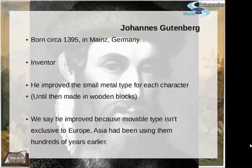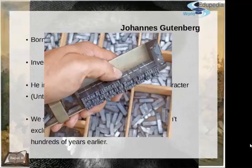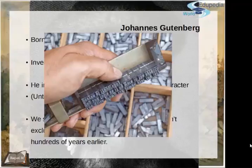This change was enormous because until then it was done with wooden blocks. If you can't picture it, imagine before just carving wooden blocks to print with — they got destroyed easily and it was really costly. With metal type, you made it once and could easily combine it and use it infinite times. We say 'improved' because movable type isn't exclusive to Europe as we sometimes tend to believe — Asia had been using it hundreds of years before — but this innovation is Gutenberg's, and that we can't forget.